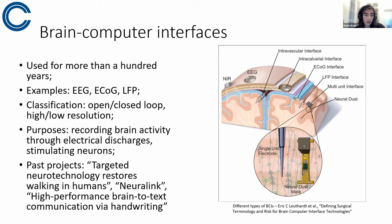Purposes are recording brain activity through their electrical discharges, because neurons are basically running on electricity. It's not in the same fashion as, for example, wires with electrons flowing through them. But the activities that neurons have do